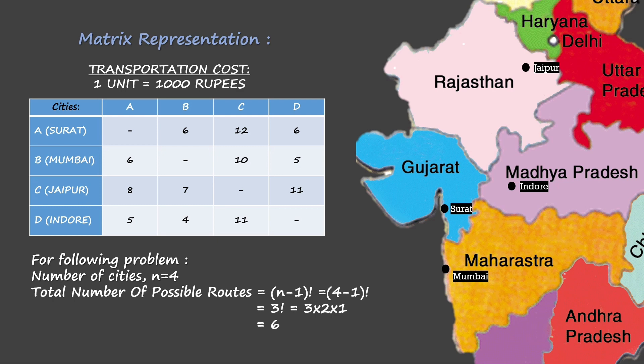We will be discussing in detail about its mathematical approach in our upcoming videos. Now, we have to see how many possible routes there can be. As we have seen in the graphical representation, there is a path between every two cities. Since there are four cities, the total number of routes possible will be 4-1 factorial, which is 3 factorial, which is equal to 6.